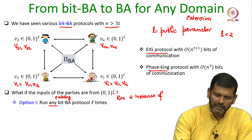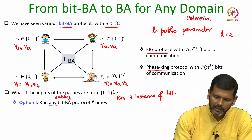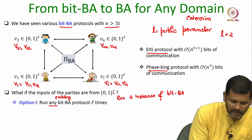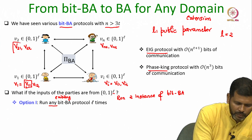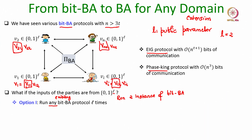You run two instances of either the EIG protocol or the Phase King protocol. In the first instance, the inputs of the parties will be V_11, V_21, V_i1, V_N1; they run a protocol and come to a decision. Independently they run a second instance where the inputs are V_12, V_22, V_N2, and V_i2. If B1 is the decision of the first instance and B2 is the decision of the second instance, the overall output will be B1 followed by B2, and the validity, liveness, and consistency properties are all satisfied.